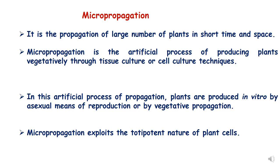Micropropagation means micro plus propagation, which means the production of a large number of plants in a short time and space. The micropropagation technique of tissue culture utilizes the property of totipotency in plant cells, because all plant cells are totipotent. So totipotent cells can give rise to new organs and also to the whole plant.